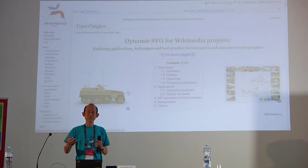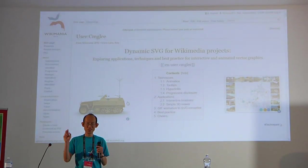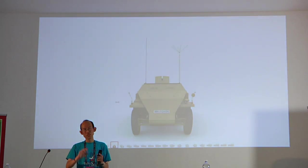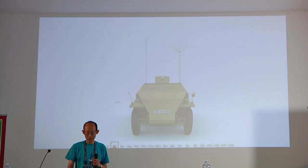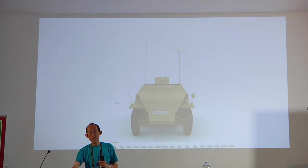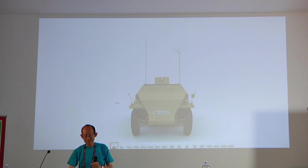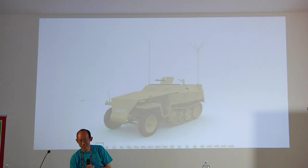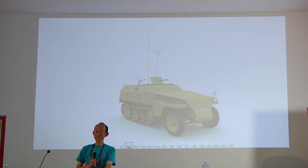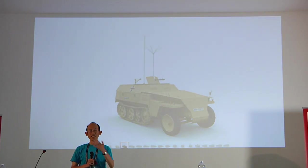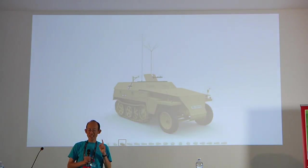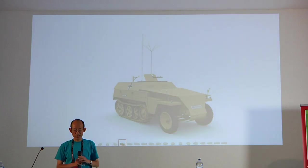Another example, which comes somewhat from the world of virtual reality, is that you can take a GIF file — this one has a rotating model of a World War II truck — and make it respond to mouse movement. As I move my mouse left and right, I can rotate the object. This can be used for mechanical engineering, molecules, or geology — for example a 3D model of a mountain.